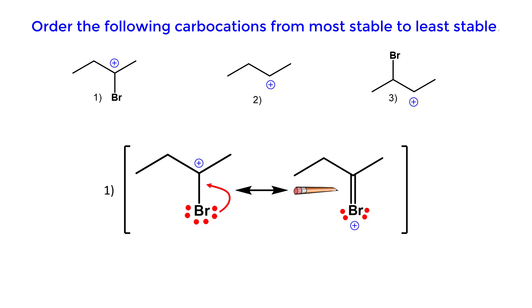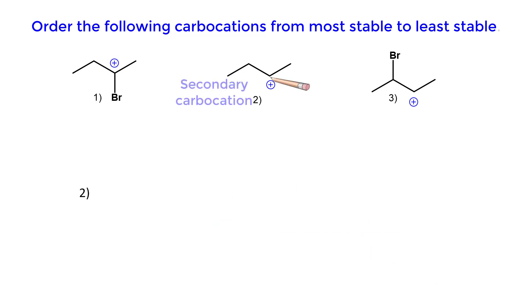And in fact, out of these two resonance structures, the resonance structure with the positive charge on the bromine is the most stable because every atom has a full octet. Structure number two is a secondary carbocation.